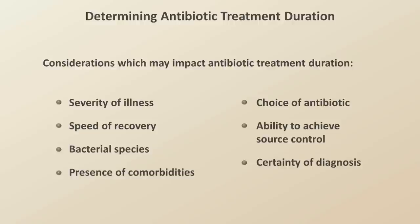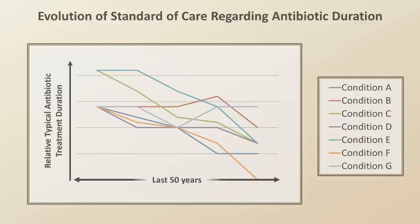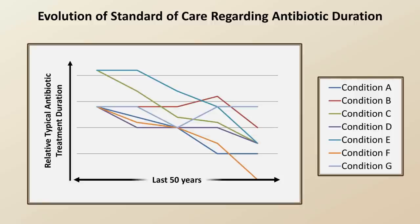There has been an interesting trend over the past 50 years regarding the standard of care for duration of antibiotic treatment. Overall, the trend has been towards shorter and shorter antibiotic courses, and there are even conditions previously treated with antibiotics in which antibiotics are no longer recommended. This broad trend continues to this day — I am now seeing staff treating community-acquired pneumonia for as short as five days, whereas during my medical training I would have risked reprimand for prescribing any course shorter than 10. I wonder if in another 10 or 20 years courses will be even shorter.